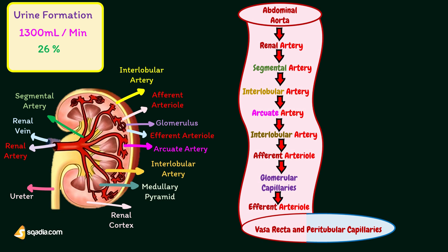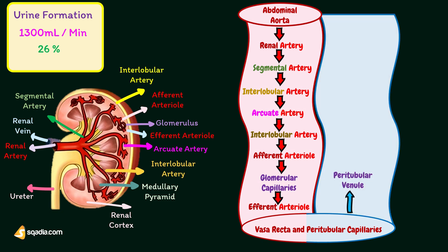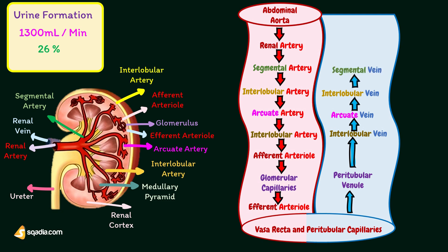Peritubular capillaries and vasa recta drain into the venous system. The venous system starts with peritubular venules and continues as interlobular veins, arcuate veins, interlobar veins, segmental veins, and finally the renal vein. The renal vein leaves the kidney through the hilum and joins the inferior vena cava.